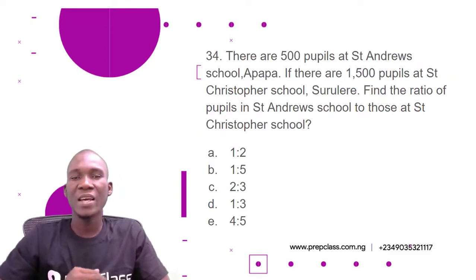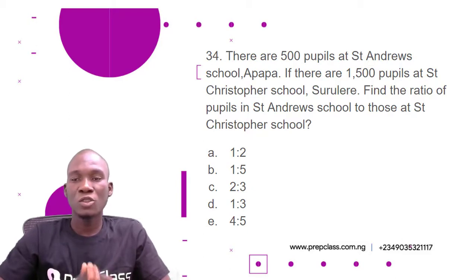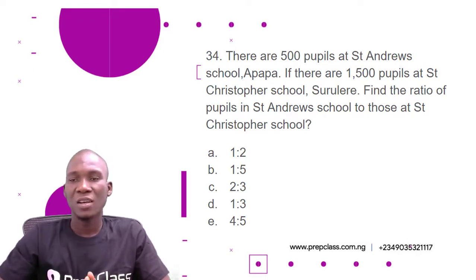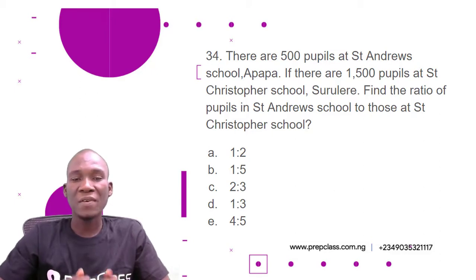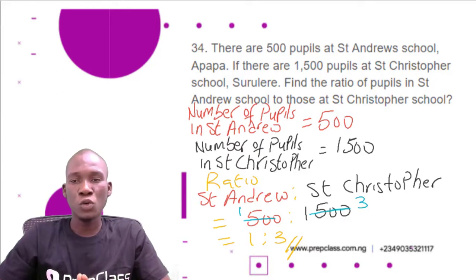Question number 34: There are 500 pupils in Saint Andrew School and 1500 pupils at Saint Christopher School. Find the ratio of pupils in Saint Andrew School to those at Saint Christopher School. Options: A) 1:2, B) 1:5, C) 2:3, D) 1:3, E) 4:5.